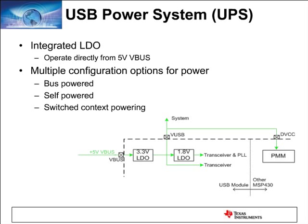In switched-context powering, the MSP430 detects whether V-Bus is present and uses that to switch between V-Bus and a self-powered system. When V-Bus is absent, the MSP430 can power down and switch off non-critical tasks to achieve low power consumption. Ideally, battery-powered devices maximize operating life by powering the device over the bus whenever V-Bus is present, then context-switching to a self-powered system when V-Bus is switched off.